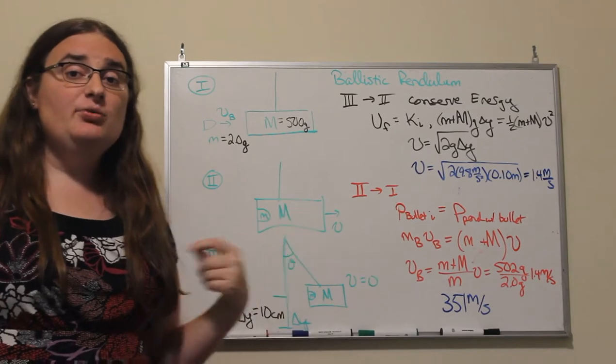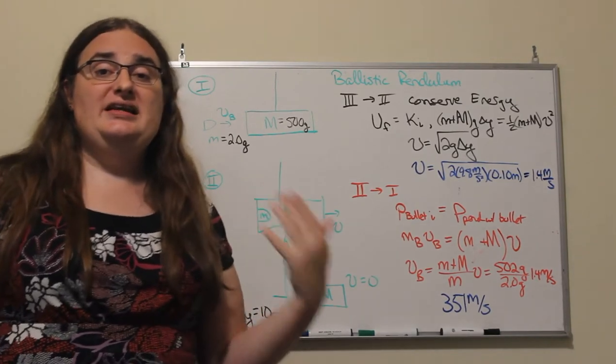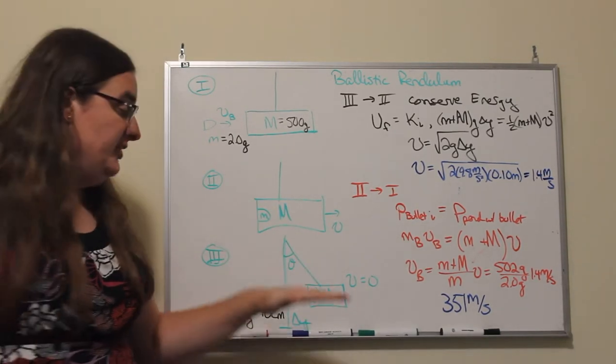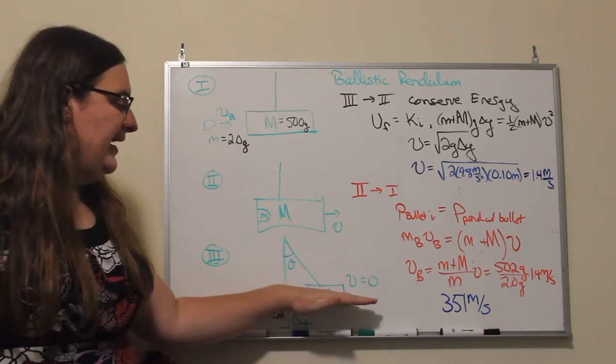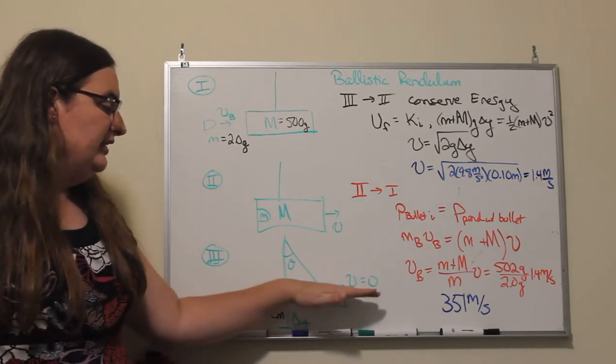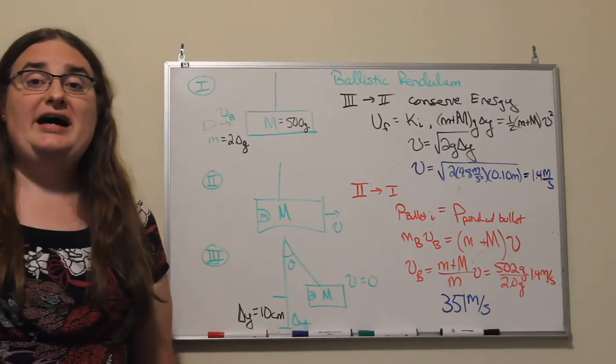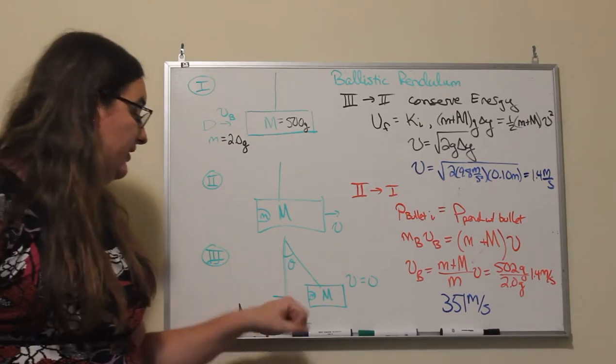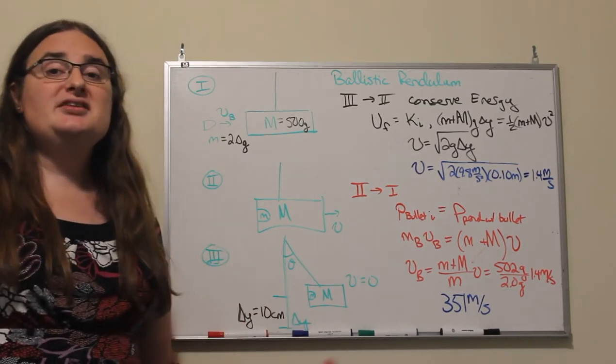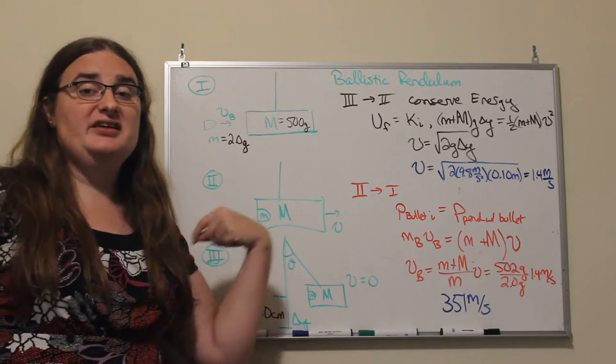Well, a pendulum basically works off trading kinetic energy for potential energy. So as that mass tries to move forward, it's raised to a higher elevation, lowering the potential energy until eventually that object stops.